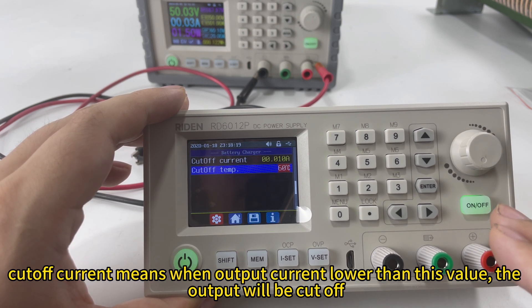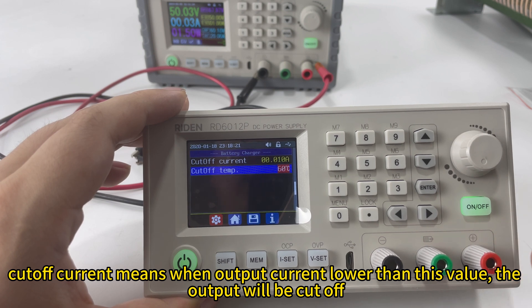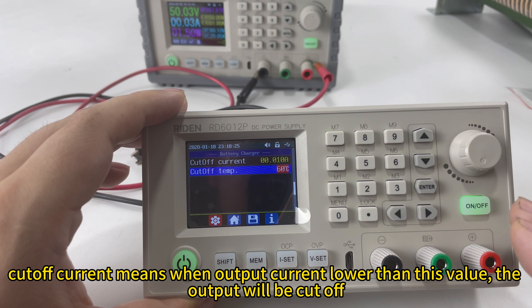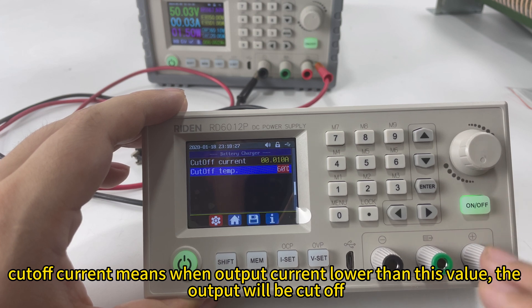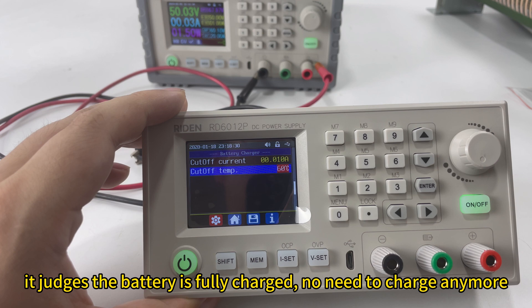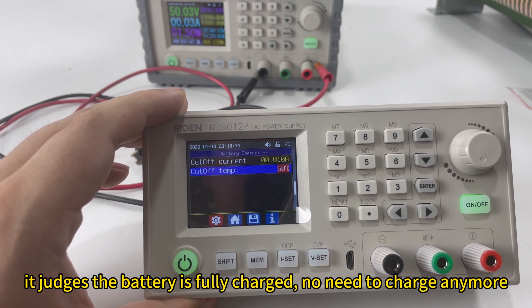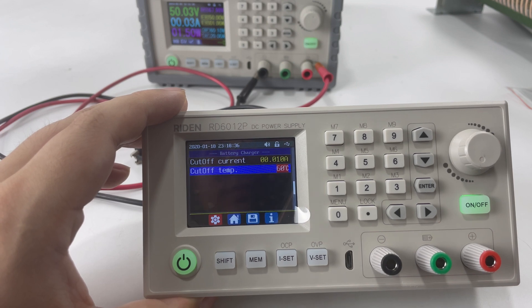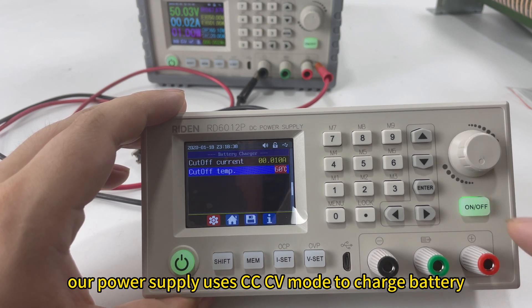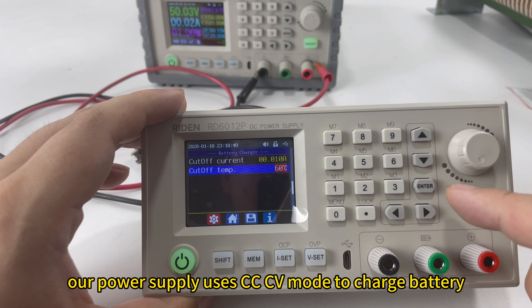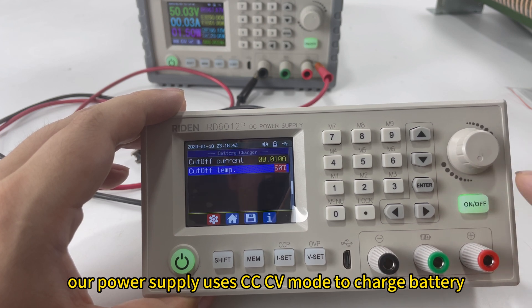The cutoff current means when the output current is lower than this value, the output will be cut off because it thinks that the battery is fully charged. No need to charge more.